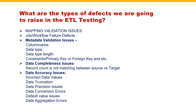Another is data accuracy issues - incorrect data values. For example, on the source side you have 100, but in the target side it is loading as 1000 - additionally one more zero is being added. So we can consider this as incorrect data loaded between source versus target. Also, for data truncation: if 'Ravindra Reddy' is there but the data type length is only 10, then only 'Ravindra R' is coming and the remaining data is truncating because of data type length issues. The data is not fitting into the target column, so we raise a defect.